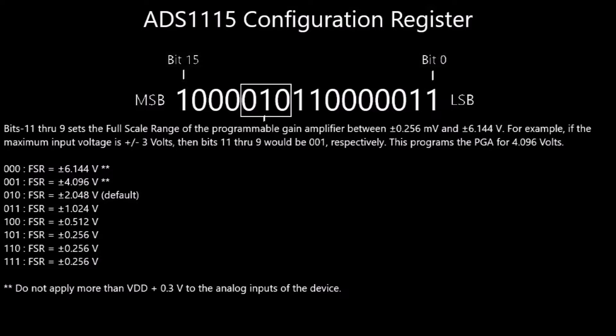Bits 11 through 9 set the full scale range of the programmable gain amplifier, between positive and negative 0.256 millivolts and 6.144 volts. For example, if the maximum input voltage is positive or negative 3 volts, then bits 11 through 9 would be 001, which programs the PGA for 4.096 volts.